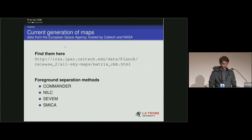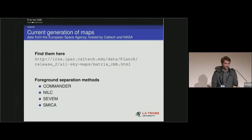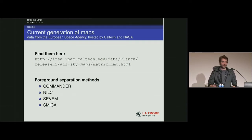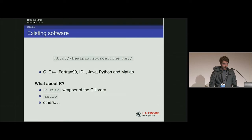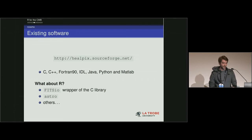The current generation of maps is produced by the European Space Agency, hosted by Caltech and NASA. There are various foreground separation methods which remove interference from the Milky Way galaxy. Existing software is in C and C++, and there are Python packages too — the Python one is pretty good with great documentation. I found the C and C++ documentation to be quite impenetrable.